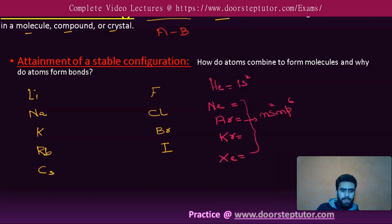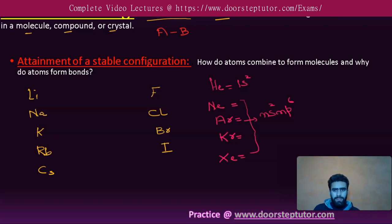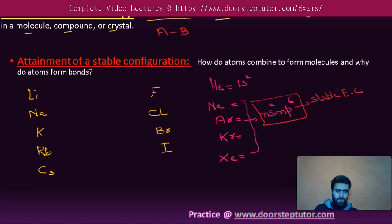Why are helium, neon, argon, krypton, and xenon called noble gas elements? Because they don't react. These atoms don't form bonds with any other element. The reason lies in their electronic configuration — since they possess a stable electronic configuration, they show zero reactivity. Because of this stable electronic configuration, these elements don't form bonds with any other elements.